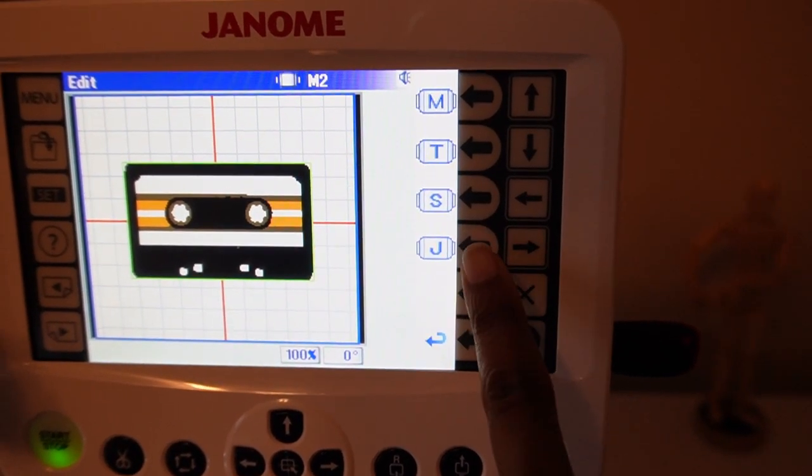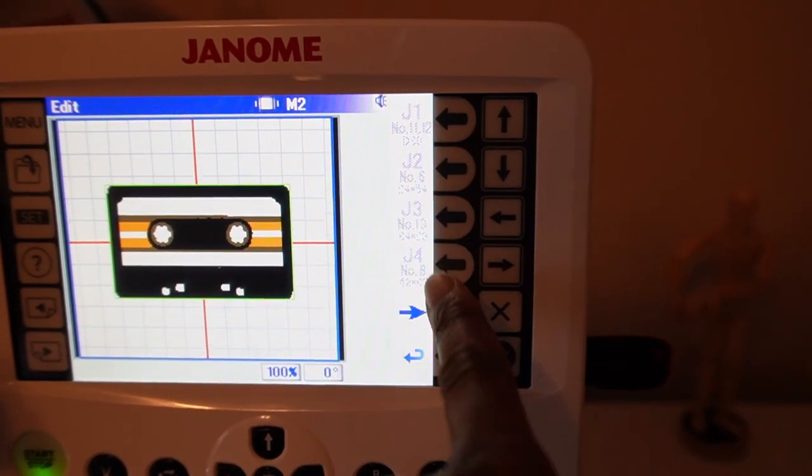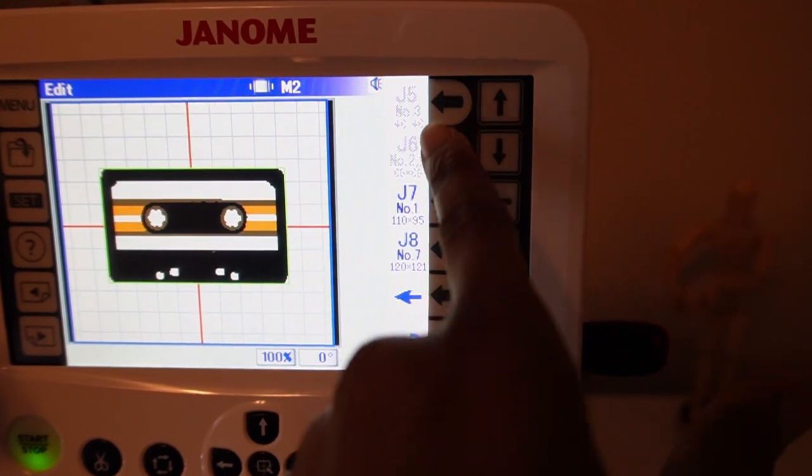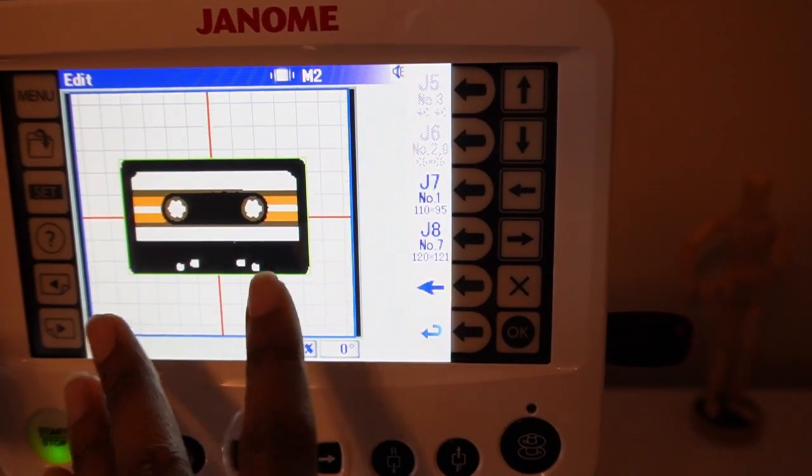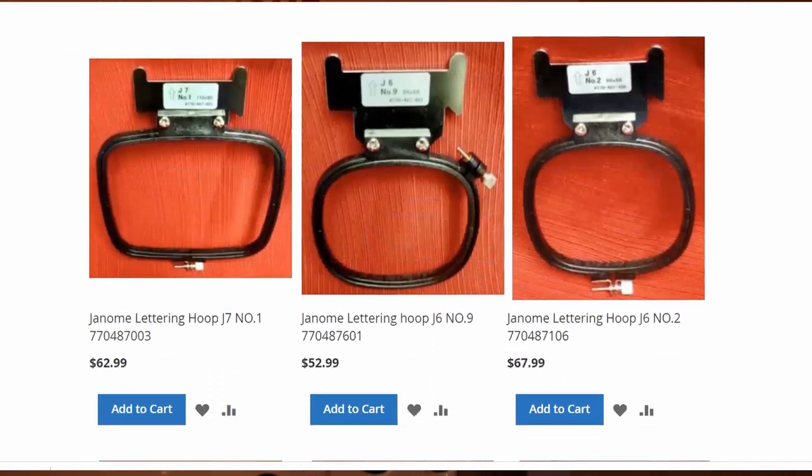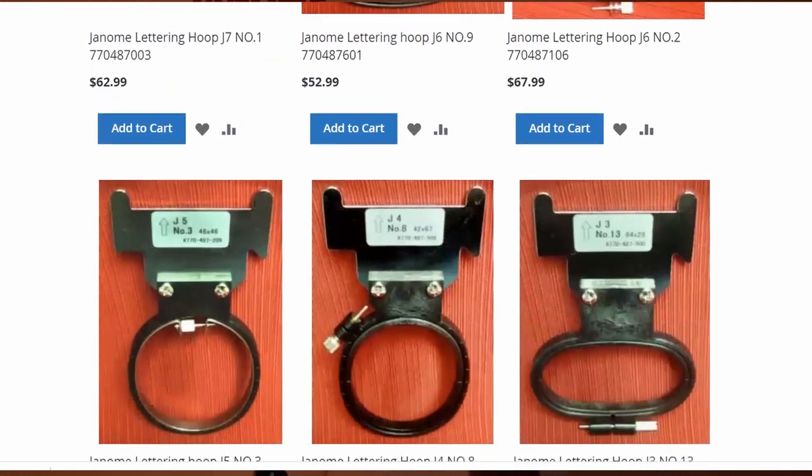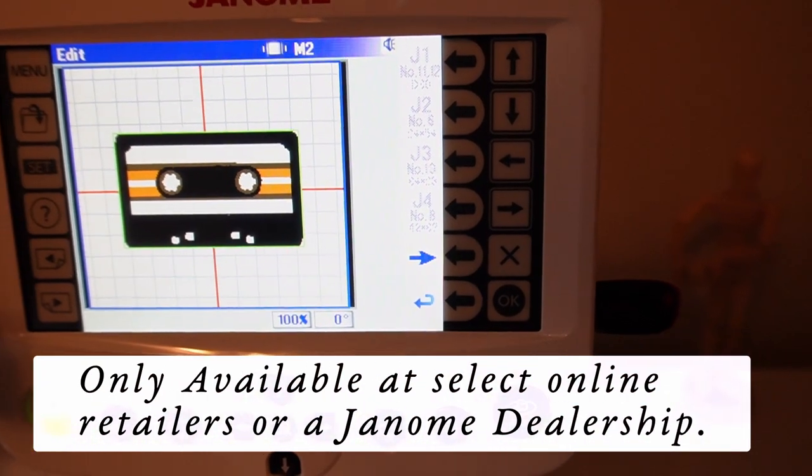See, then you have your J hoops, which are your monogramming hoops. And you have all of these different choices, but they're not showing up because I have a certain size hoop already selected. But these are your choices. These monogramming hoops are not readily available in store, at least not here in the United States anyways.